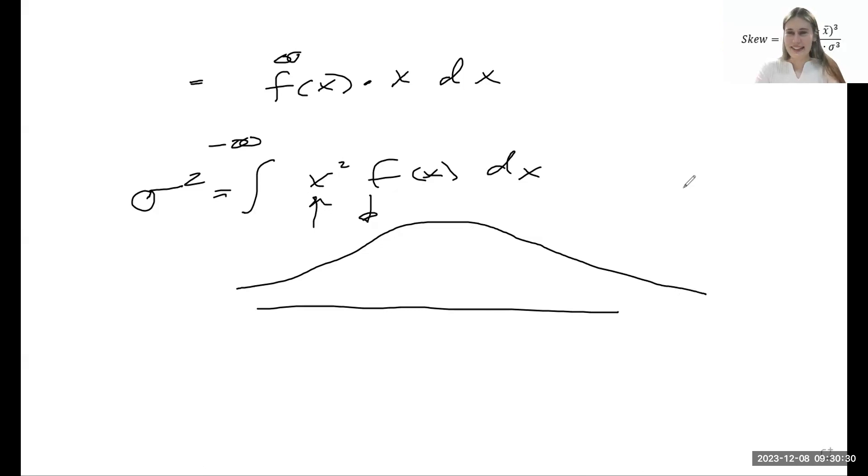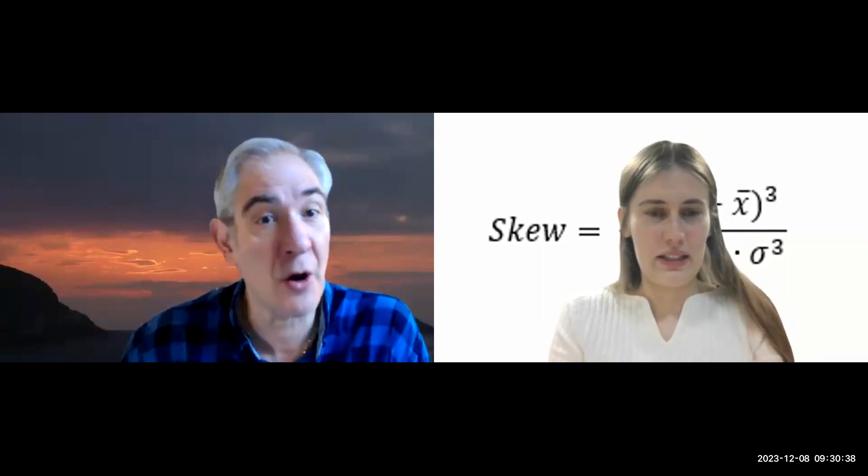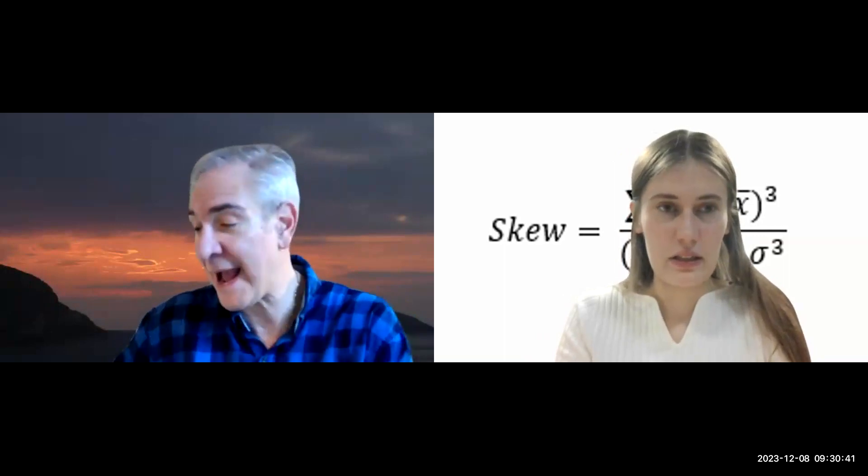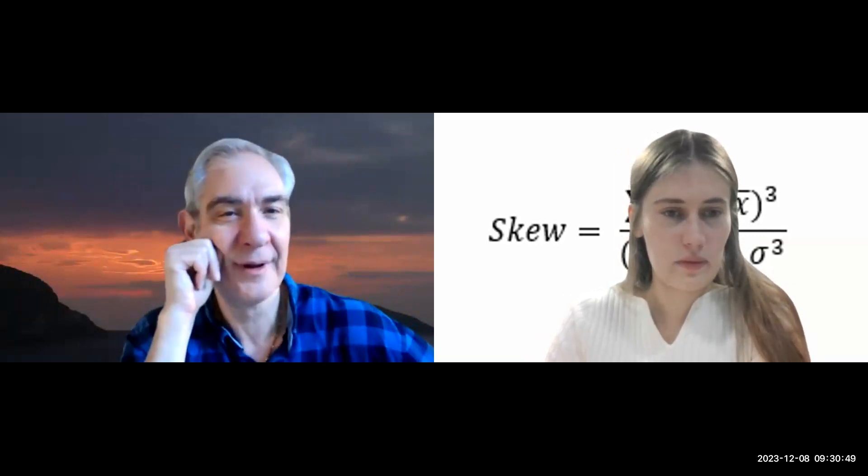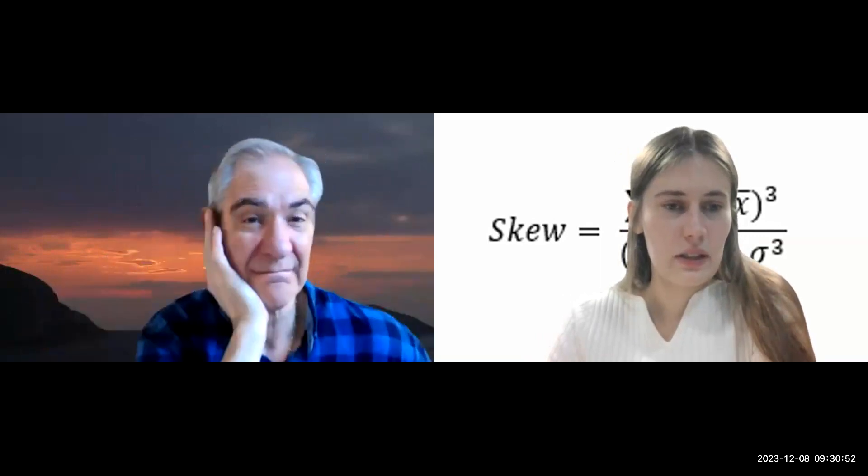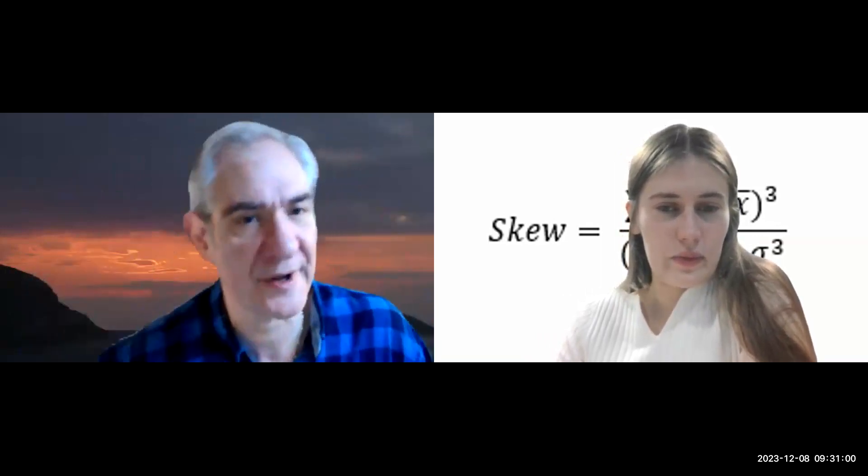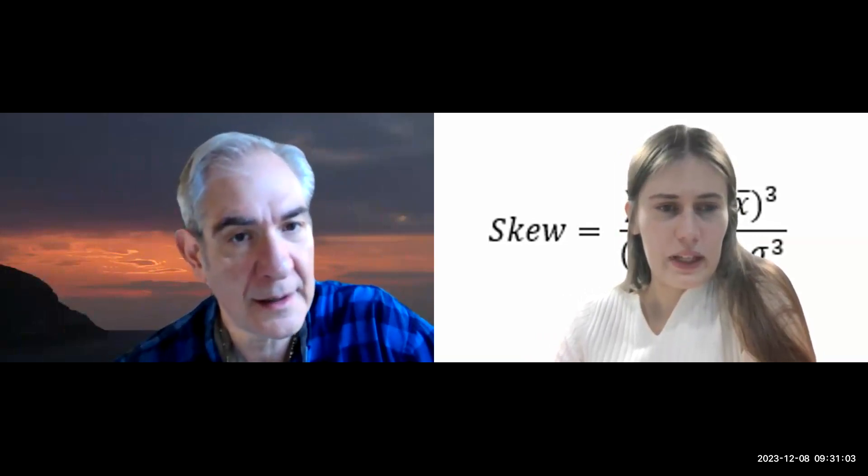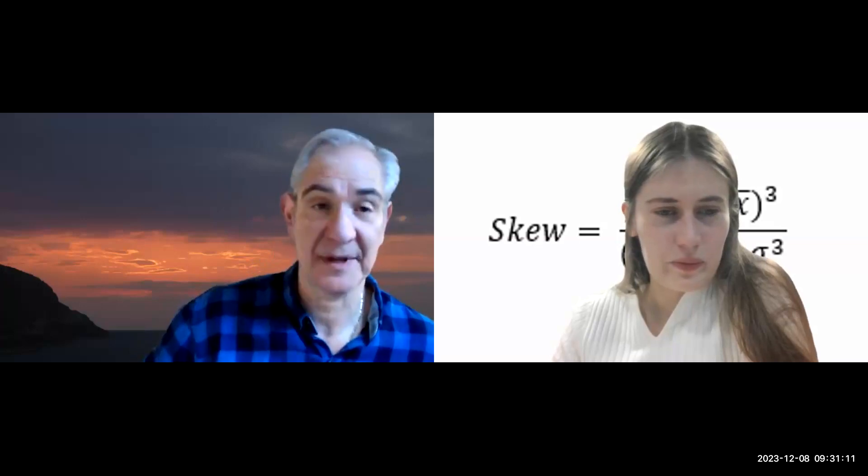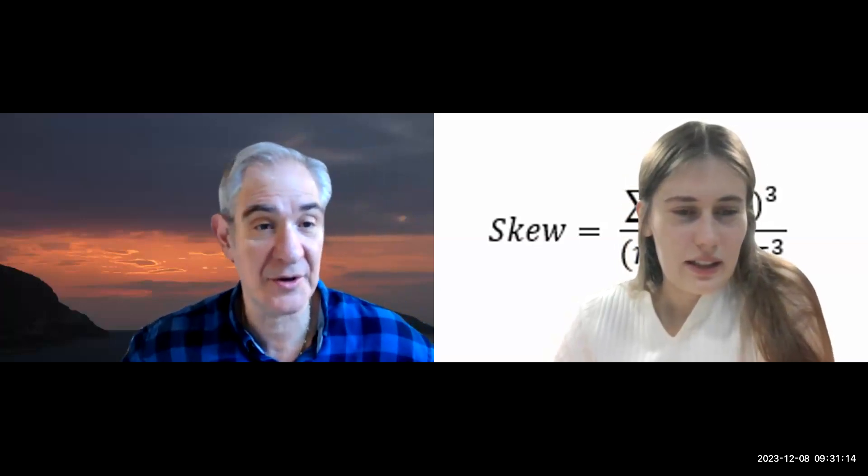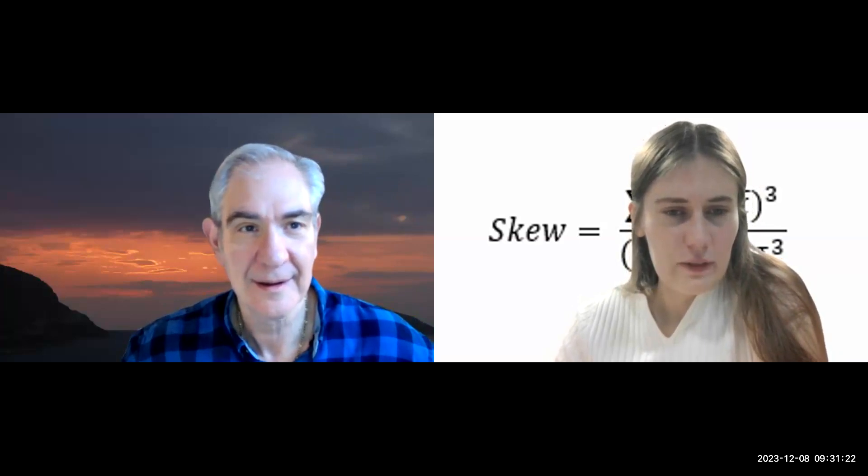If we're looking at kurtosis, skewness looks at probably the cube. Does it look at how it's shaped, how spread out it is? Inflection points? Skewness goes with the third, kurtosis goes with the fourth, I imagine.